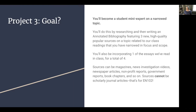The annotated bib will have three new high-quality popular sources on a topic related to our class readings, and you will have narrowed that topic in both focus and scope. You're also incorporating one of the essays we read in class — so a total of four bibliographic entries and four annotations. Sources can be magazines, robust news investigation videos, newspaper articles, nonprofit reports, government reports, even book chapters. The only real requirement is that they have to be good sources and they cannot be scholarly journal articles — that's for EN 102.